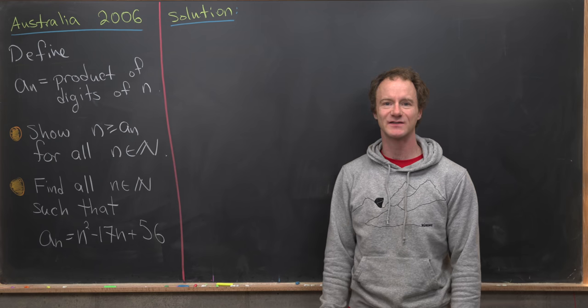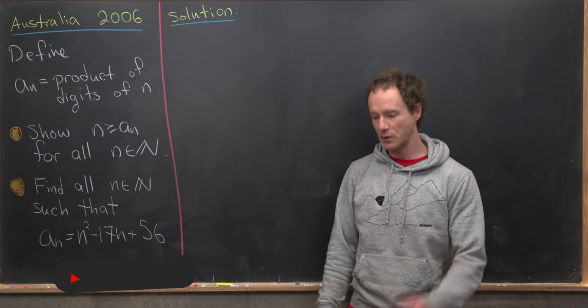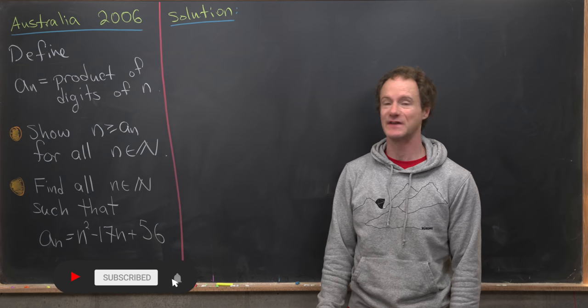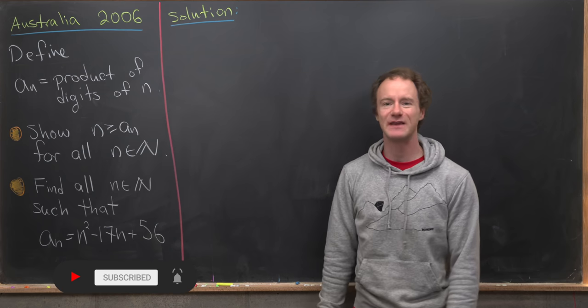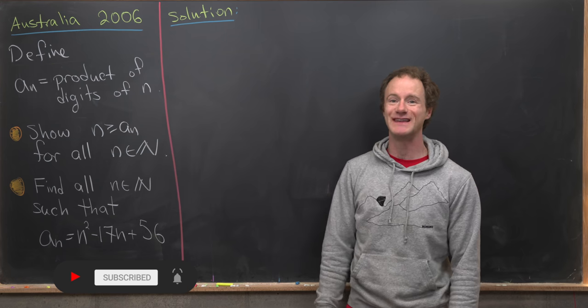Here we're going to look at a nice problem from the 2006 Australian National Math Olympiad. We want to define the following sequence of natural numbers. It's going to be given by a_n and it will be the product of the digits of n.